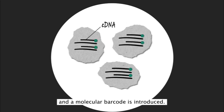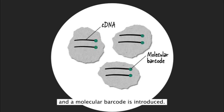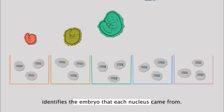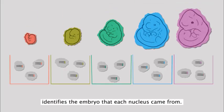cDNA is synthesized and a molecular barcode is introduced. The first molecular barcode identifies the embryo that each nucleus came from.